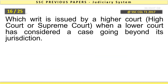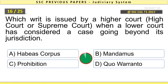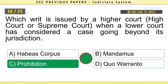Which writ is issued by a higher court — High Court or Supreme Court — when a lower court has considered a case going beyond its jurisdiction? Answer: Prohibition.